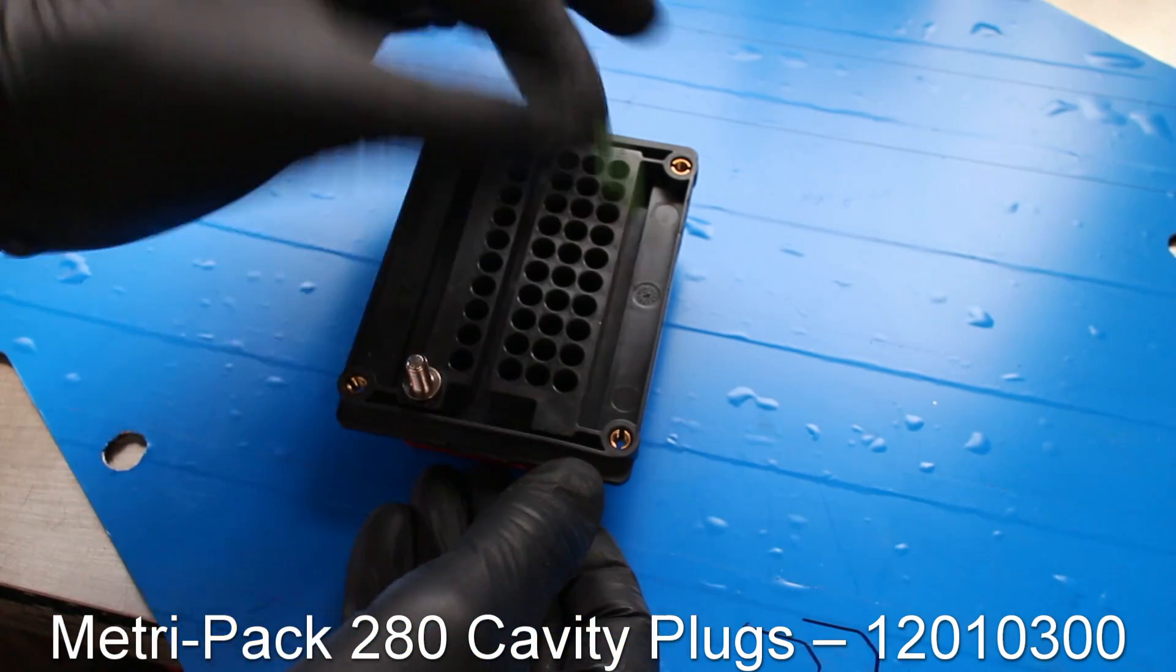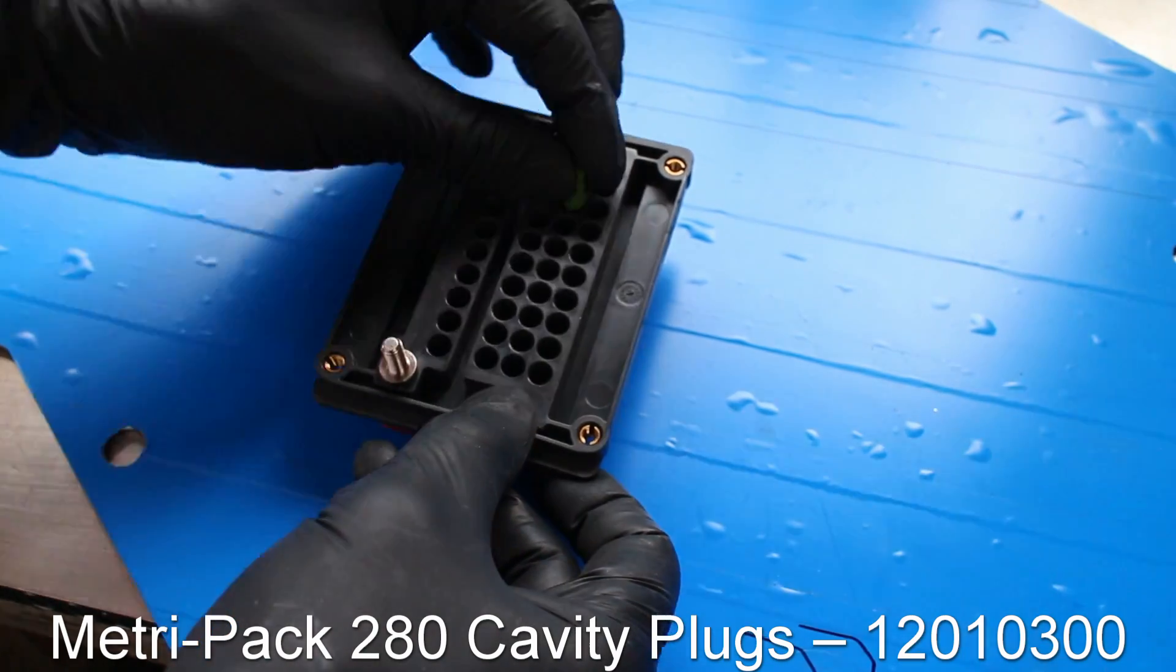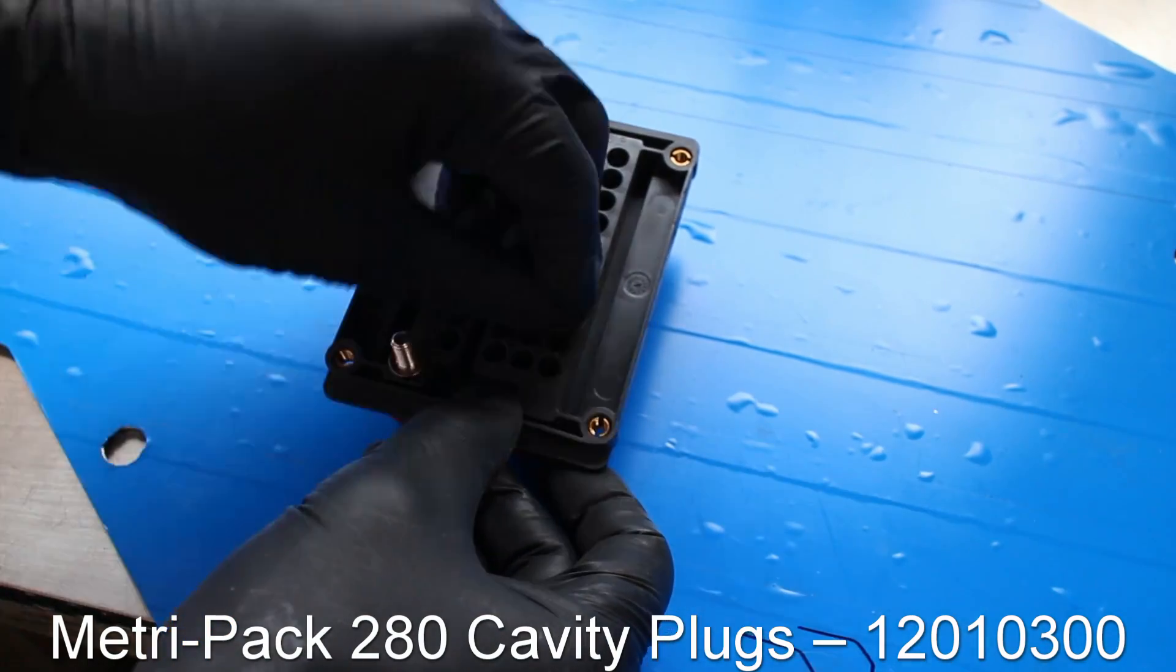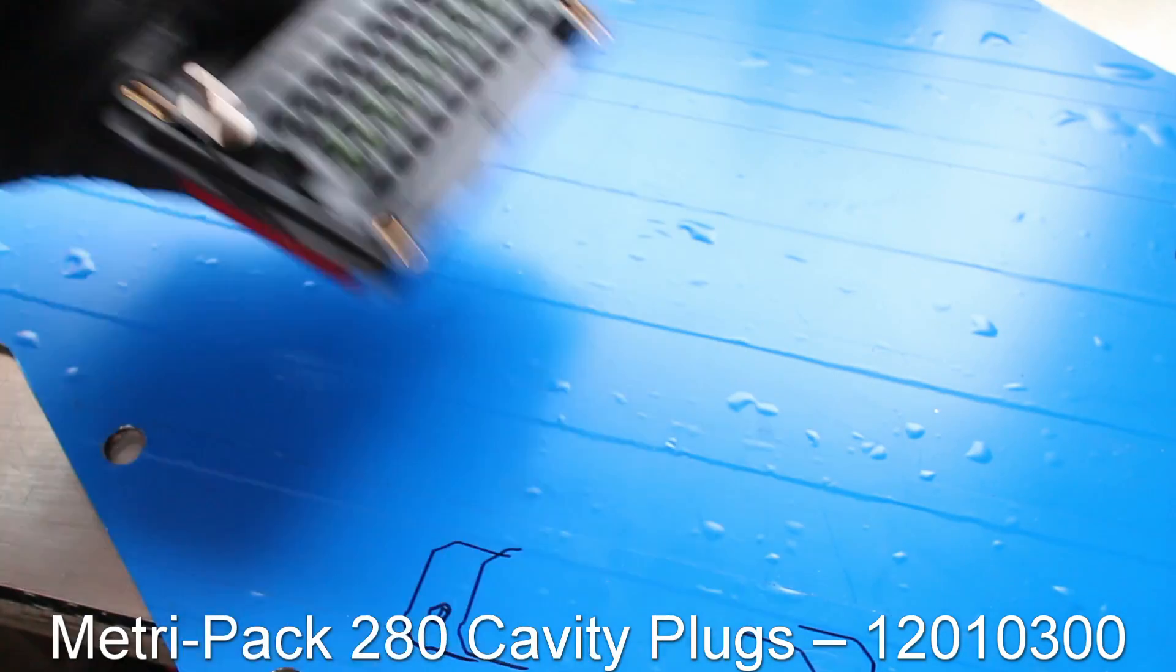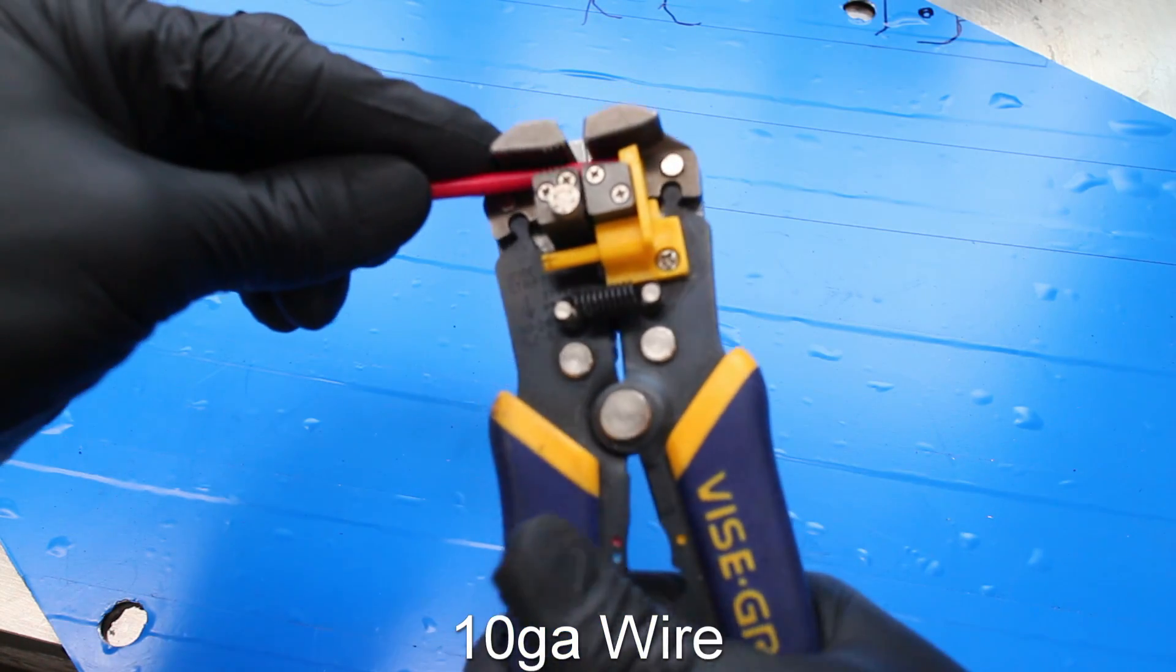To start, I plugged the 10 terminal holes that I won't be using. These holes are used for the 5-pin relays that I'm currently not going to use. Next, I need to feed the relay with power. I'm using 10-gauge wire for this.